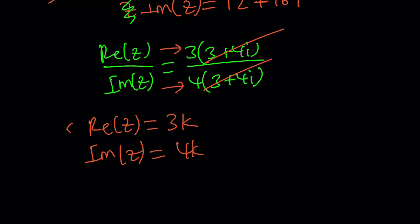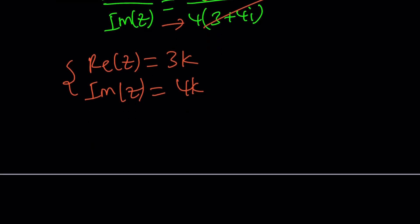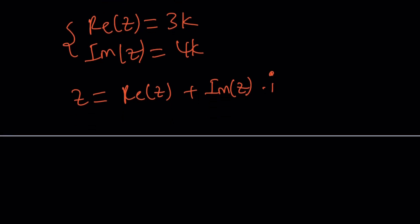But Z is made up of the real and imaginary parts. So in other words, we can write the Z as real Z plus imaginary Z multiplied by i. That's how you can write a complex number. So Z becomes 3k plus 4ki. What can I do with this? Plug into one of these equations.